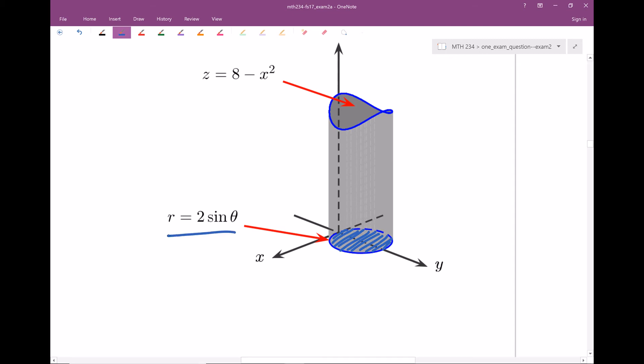But then also we can see that the base here is given to us in terms of r and theta. So that's a big indicator that we don't want to use just x's, y's, and z's, that actually using r's and thetas, like cylindrical coordinates, that this would be a useful technique.